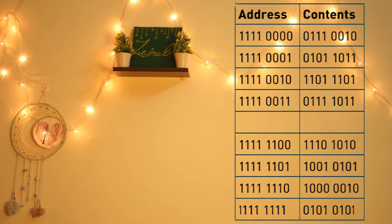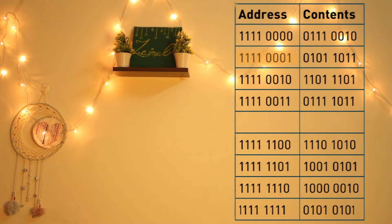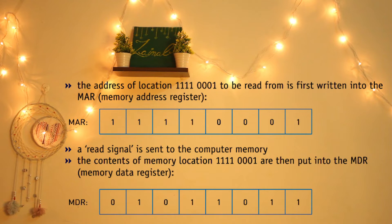First, consider the read operation. We will use the memory section shown in this table. Suppose we want to read the contents of memory location 11110001. The address of location 11110001 to be read from is first written into the MAR, the memory address register. A read signal is sent to the computer memory. The contents of memory location 11110001 are then put into the MDR, the memory data register.